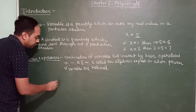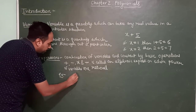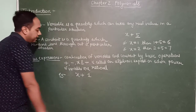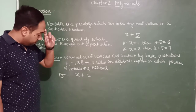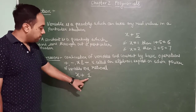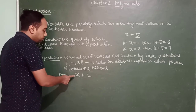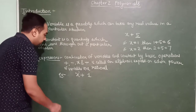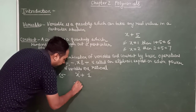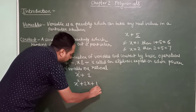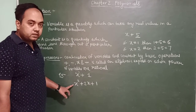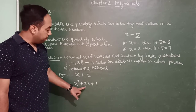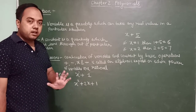Let's look at examples of algebraic expressions. The simplest one is x plus 5 — here x is the variable and 5 is the constant, combined using the basic operator plus. The power of x here is 1, which is rational. Another example is x squared plus 2x plus 1, which is also an algebraic expression because variables and constants are combined using plus and the power of x is rational.